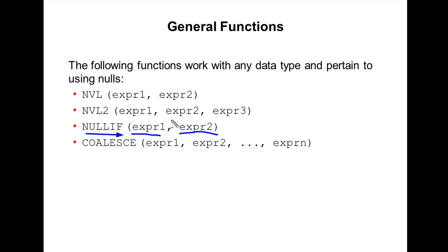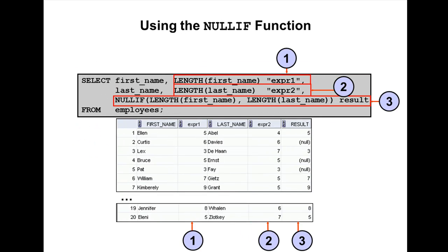Now I'm going to show you an example. Here we are using two functions: LENGTH and NULLIF. The first one is length of the first name, length of the last name. If length of the first name and length of the last name are equal, it returns null. Otherwise it returns the first expression.